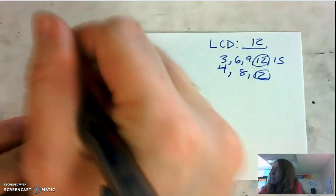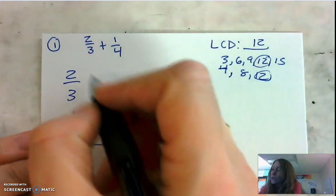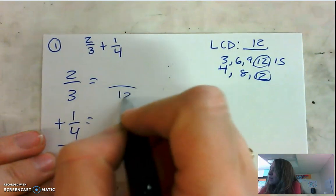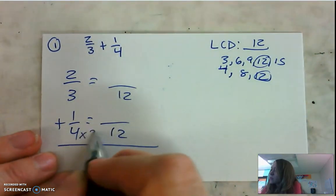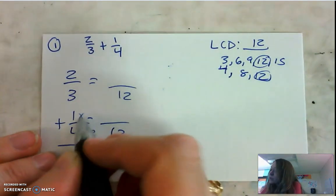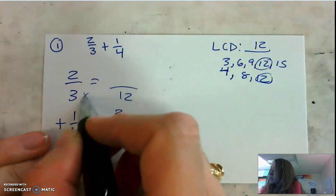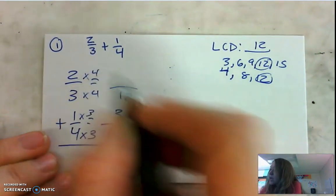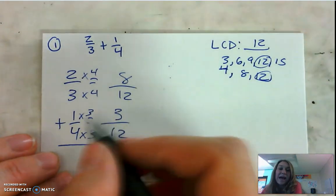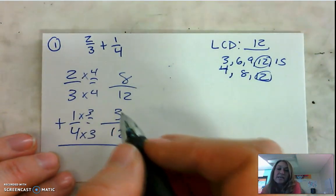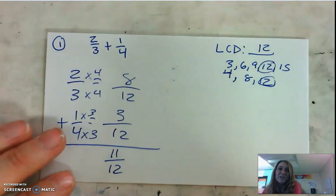I'm going to rewrite my fractions vertically — 2 thirds plus 1 fourth — and now I'm going to make those equivalent fractions with a denominator of 12. To go from fourths to twelfths, I need to multiply by 3. What you do to the bottom, you do to the top. 1 times 3 is 3. To go from thirds to twelfths, I need to multiply by 4. What you do to the bottom, you do to the top. 2 times 4 equals 8. Now I have common denominators, so I can add 8 twelfths plus 3 twelfths, which gives me 11 twelfths. That's our answer for number 1.